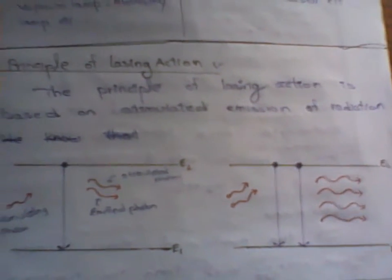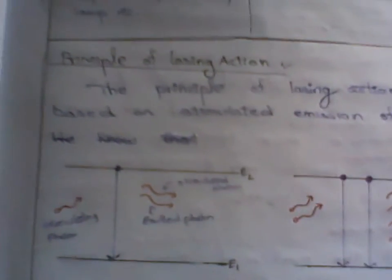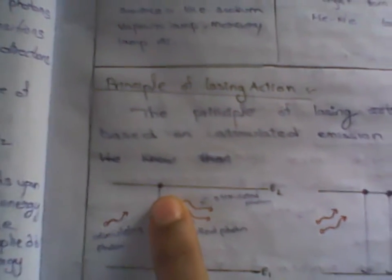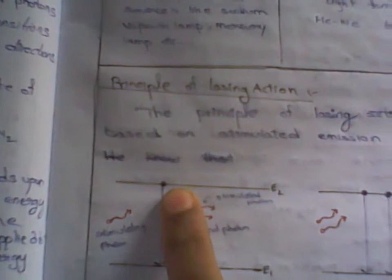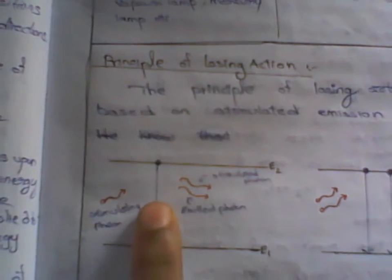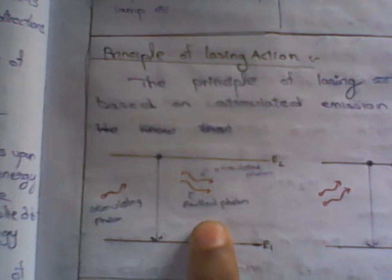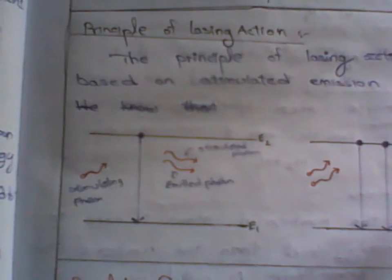The principle of laser action is based on stimulated emission of radiation. We can observe that when energy is incident on an electron in a higher energy state, the electron de-excites to the lower energy state by emission of two photons - one stimulated photon and one emitted photon. When we have two stimulated photons, we have four outcome photons, and this is the laser's principle.